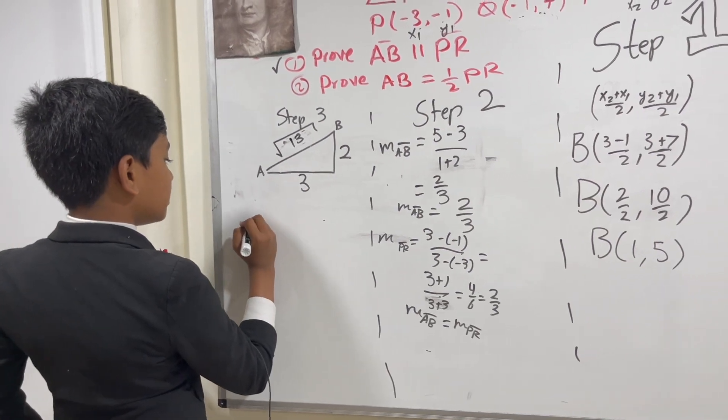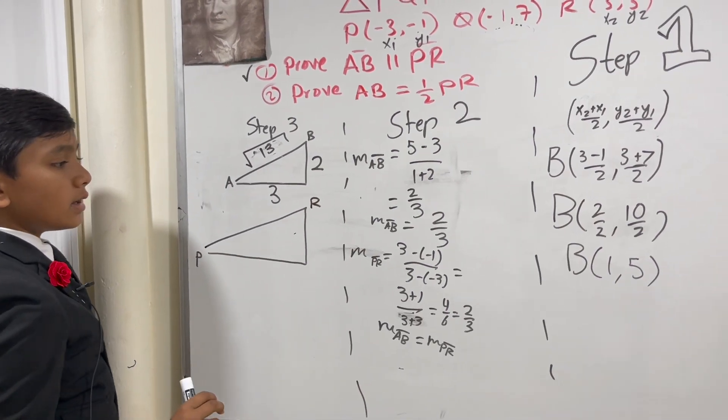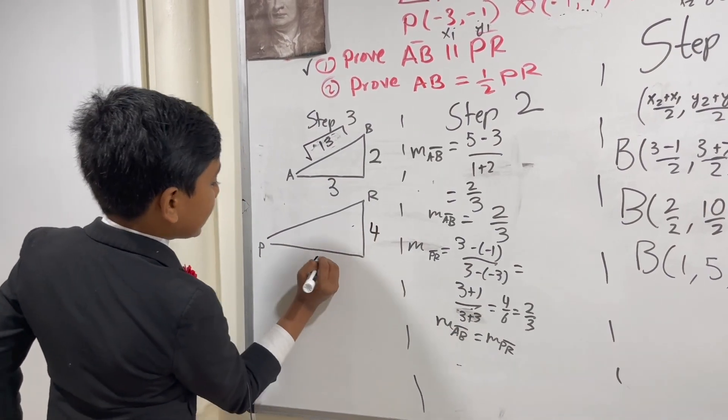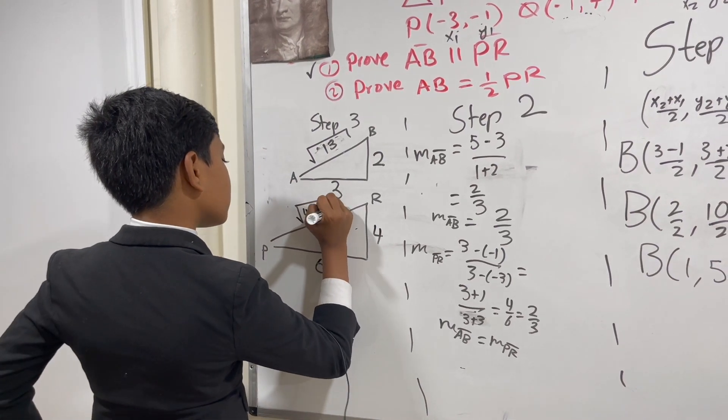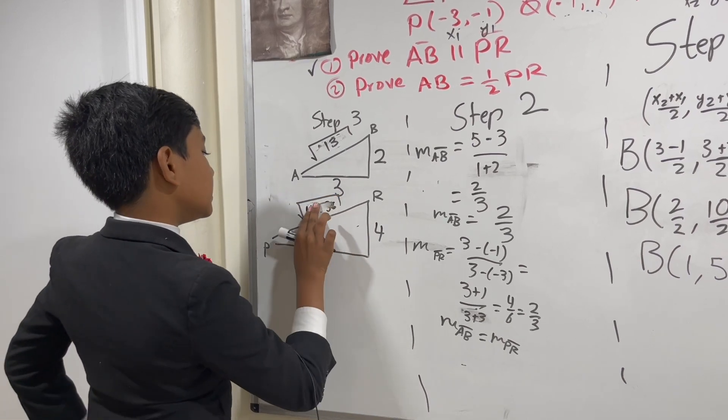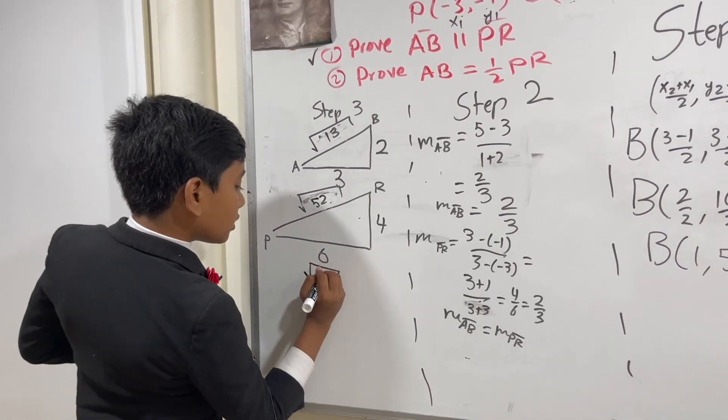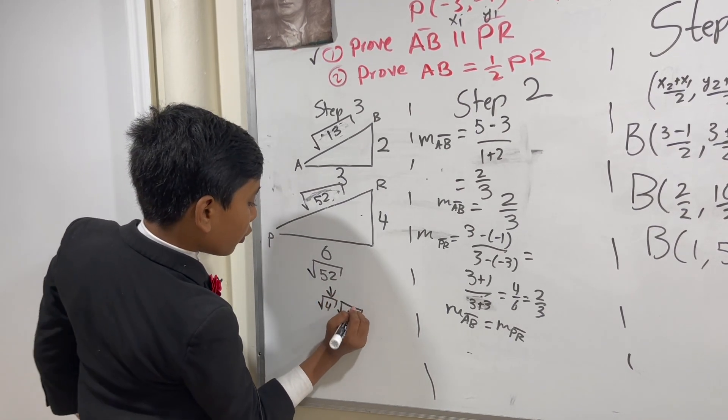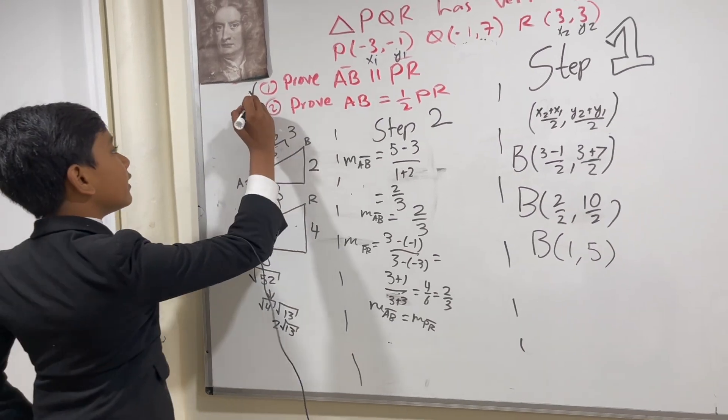Now, what about PR? If this is P and that is R, we already know the differences are 4 and 6. If we take 4 squared plus 6 squared, we get 16 plus 36, which is the square root of 52. 52 is an integer multiple of 13. So it's actually the square root of 4 times the square root of 13, which yields 2 times the square root of 13. So we've proven this as well.